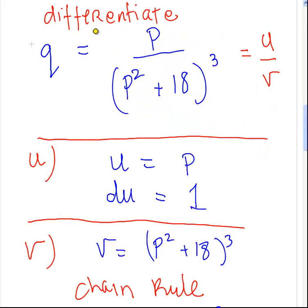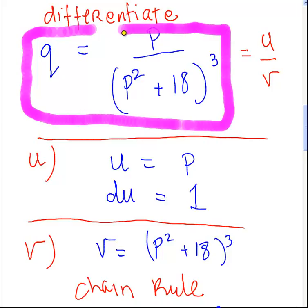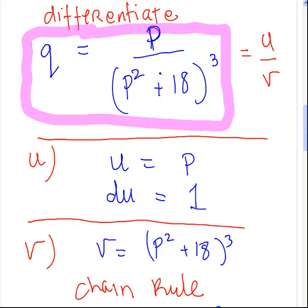So I have it set up here. I've written this out before just to make sure I don't make any mistakes, because there's nothing worse than dropping a sign along the way. What I'm going to do here is use the quotient rule. All the things like the chain rule, product rule, quotient rule, and so on, for differentiation come into play here. So I'm going to let the numerator equal U, which is P, and V equals P squared plus 18, all cubed.